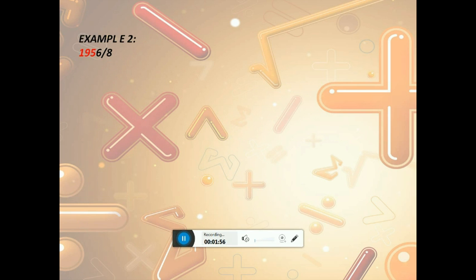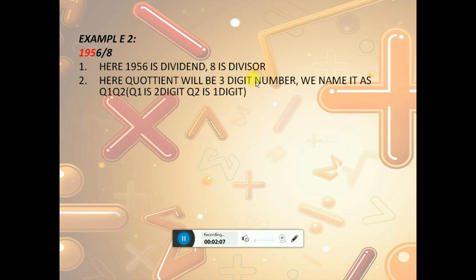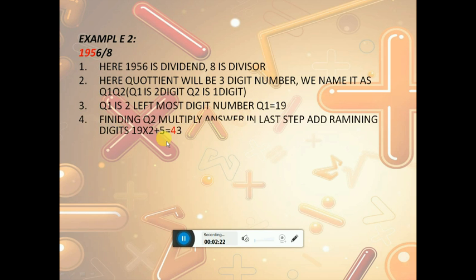Going to larger numbers like 1956 divided by 8. Here 1956 is the dividend and 8 is the divisor. The quotient will be a 3-digit number, so we name it as q1 and q2, where q1 is 2 digits and q2 is 1 digit. q1 will be the 2 left-most digit numbers, so q1 equals 19.